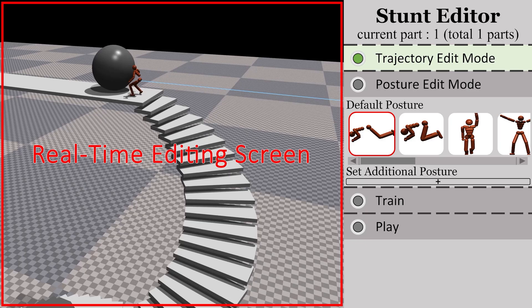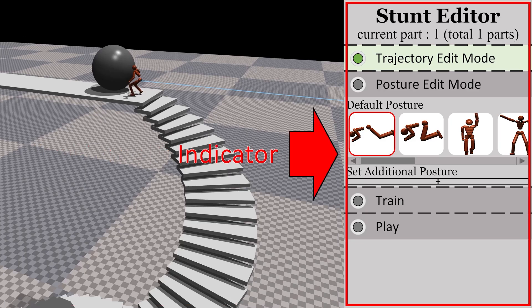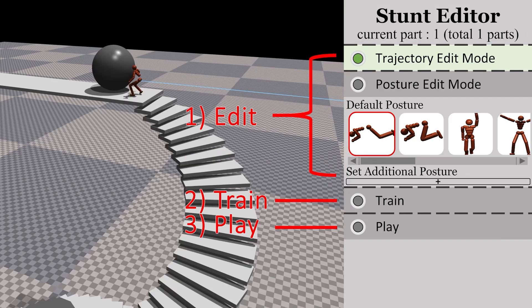We will present the process of making a stunt film. We perform real-time editing within the simulator. The indicator on the right displays the current stage of the process being executed by our VISA system. To create a scene, our system follows three simple steps: edit, train, and play.